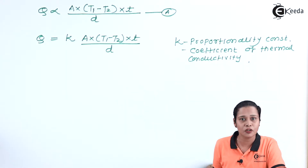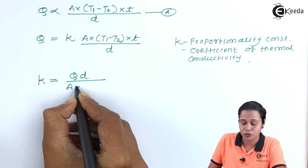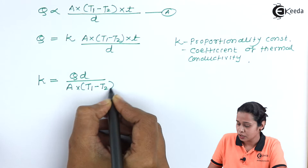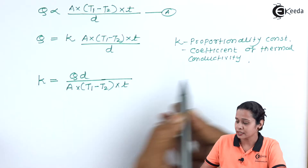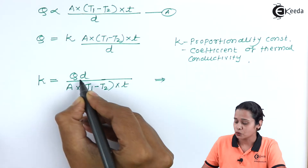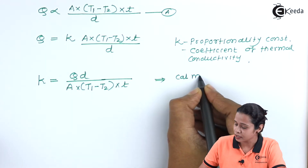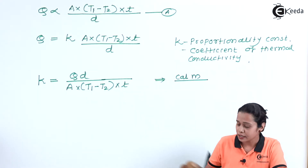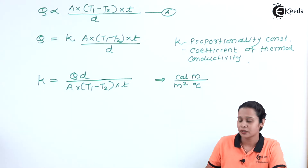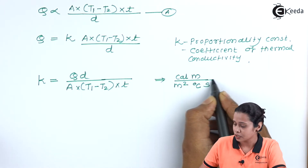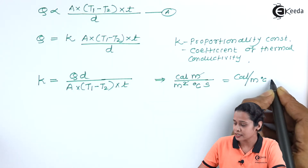The coefficient of thermal conductivity K is equal to Q·D divided by A·(T1 minus T2)·t. For the unit of K: Q is energy so its unit is calorie; D is distance so its unit is meter; A is cross-sectional area so its unit is meter square; temperature is in degree Celsius; and time is in seconds. The meter in the numerator and one meter from area cancel, giving the unit as calories per meter·degree Celsius·second.